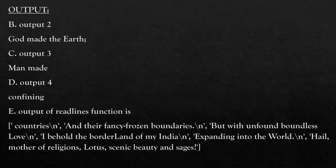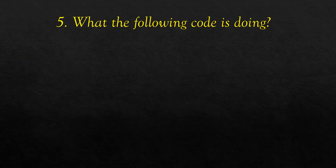The output of code B is 'God made the earth', the output of code C is 'manmade', the output of code D is 'confining', and code E calls the readlines function so the rest of the lines are read and stored as a list of strings.